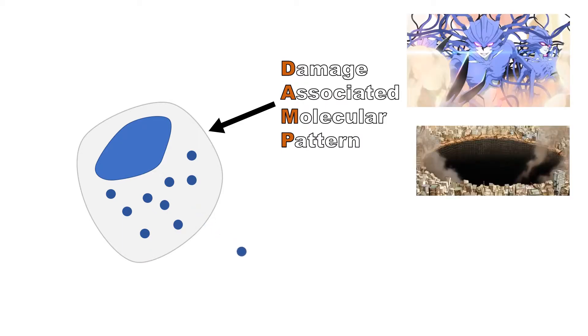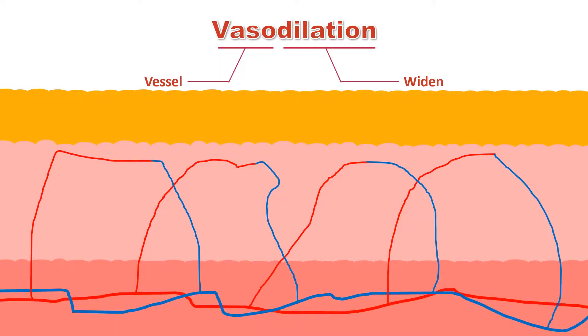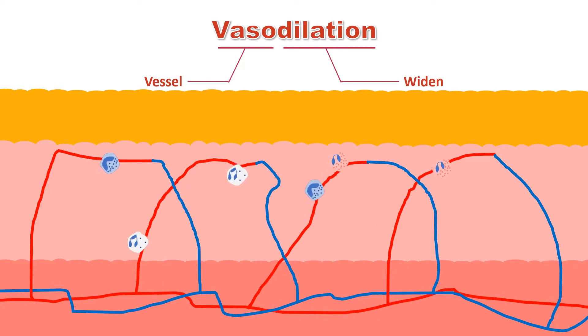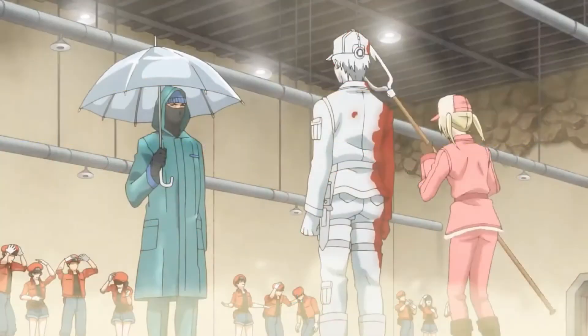They release the granules, which contain histamine, resulting in vasodilation, the widening of the blood vessels, increasing blood flow, and allowing for easy movement of immune cells.